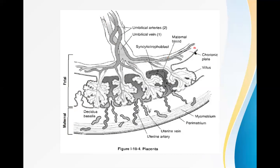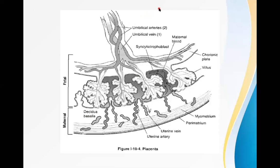The outer surface of the blastocyst is the trophoblast, and that trophoblast will differentiate into the fetal component of the placenta. Lots of chorionic villi are formed, along with the chorion membrane and amnion. The umbilical cord is also attached on the fetal side, whereas the maternal side is formed by the decidua basalis.